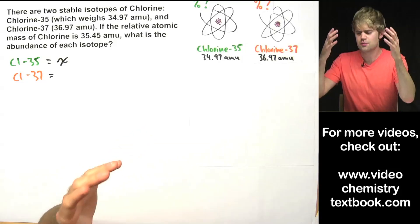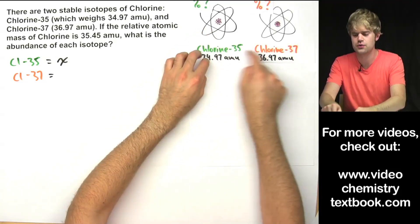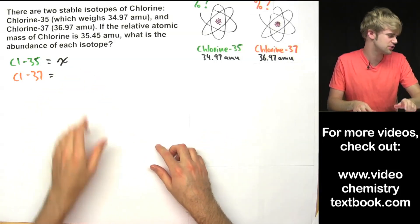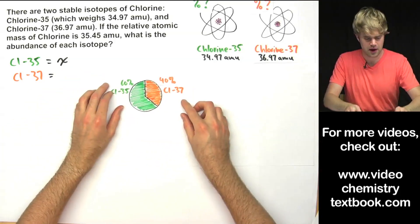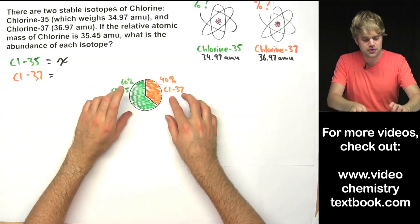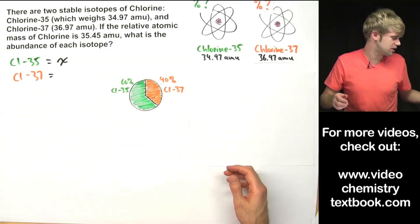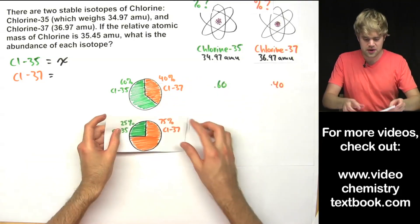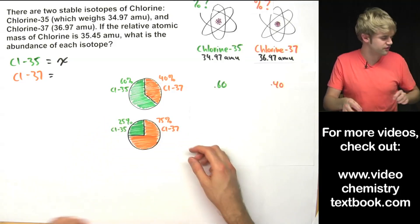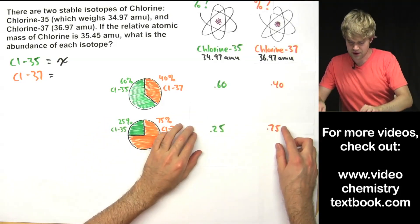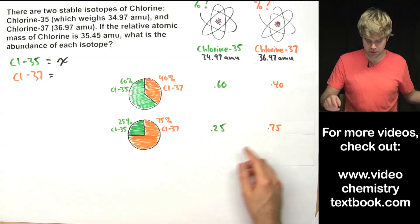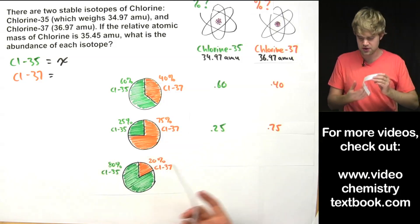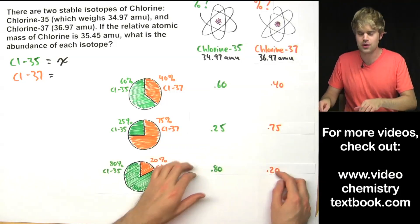I want to show you just some random possible abundance values for these two isotopes so you can see a pattern. Let's say randomly there could be 60% chlorine-35 and 40% chlorine-37, or as decimals 0.6 and 0.4. Or there could be 25% chlorine-35 and 75% chlorine-37 — decimals 0.25 and 0.75. Or 80% chlorine-35 and 20% chlorine-37 — decimals 0.8 and 0.2. I'm just making these up.